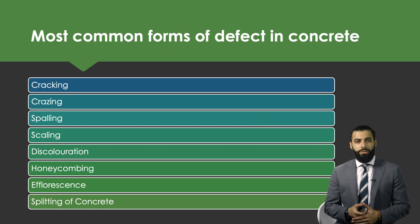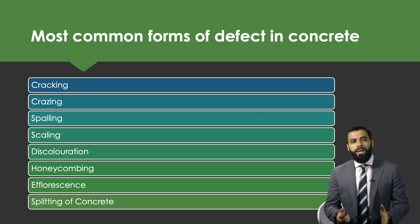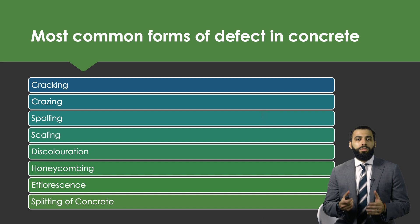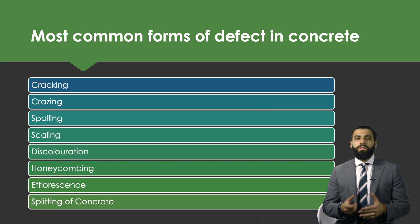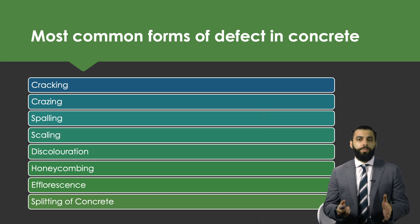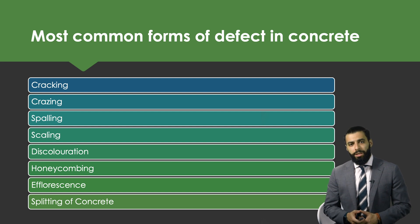There are various forms of defects in concrete. The most common ones are: cracking, crazing, spalling, scaling, discoloration, honeycombing, efflorescence, and the splitting of concrete. We'll have a look at each of these in turn, starting with crazing.